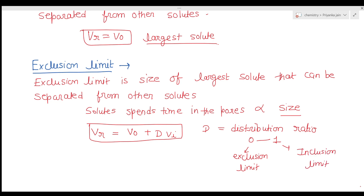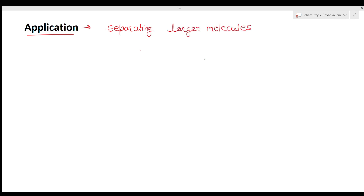Size exclusion chromatography has a large number of applications. It can be used as a rapid means of separating larger molecules such as polymers or biomolecules like carbohydrates. A mixture containing a wide range of formula weights can be separated by joining several columns in series, connecting them one by one to separate different ranges of formula weights.